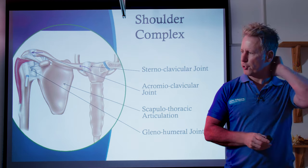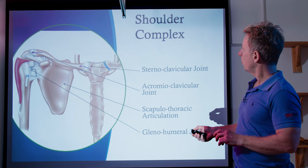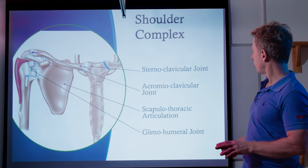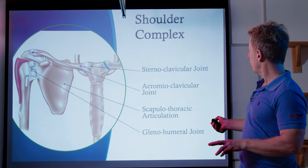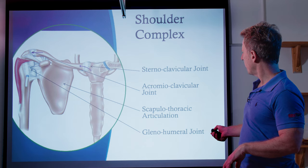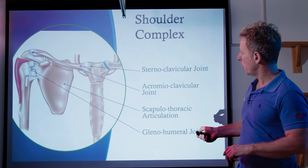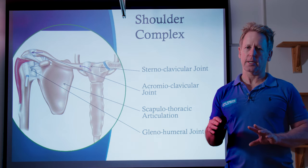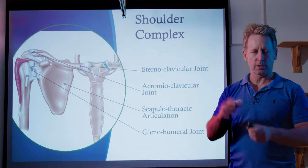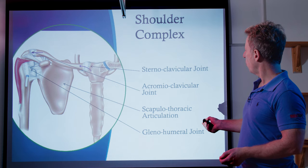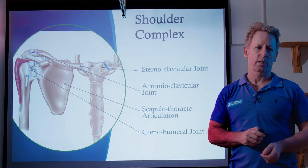Let's have a recap on the shoulder itself. When I say the word shoulder, we're not just talking about the shoulder joint — medically called the glenohumeral joint — it also encompasses the sternoclavicular joint (SC joint), the acromioclavicular joint (AC joint), and also the scapulothoracic articulation, which is not a joint in itself. It's like a suspension, where the scapula hovers over the ribcage. So we have almost four joints or articulations that are part of the shoulder complex.